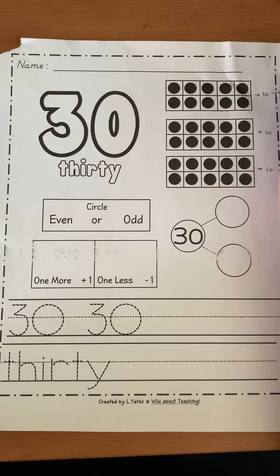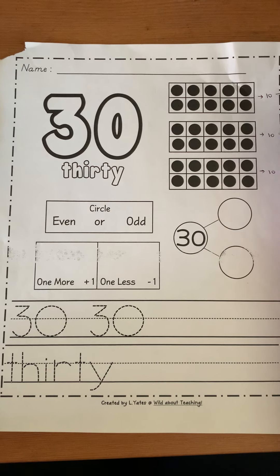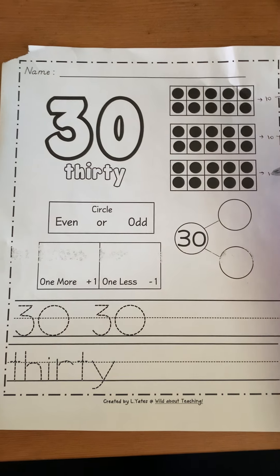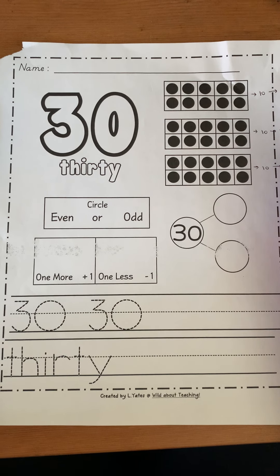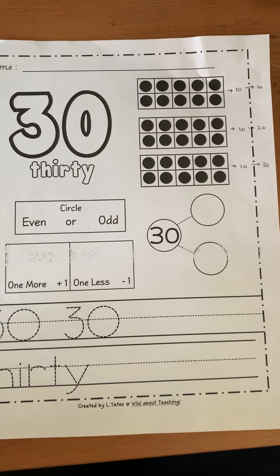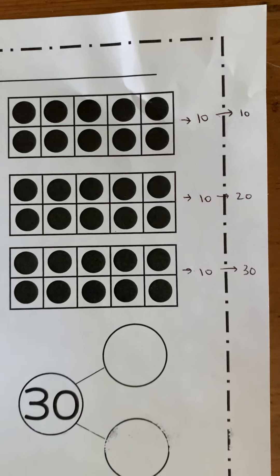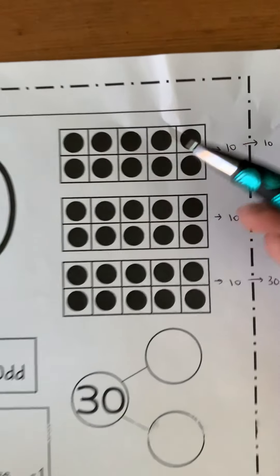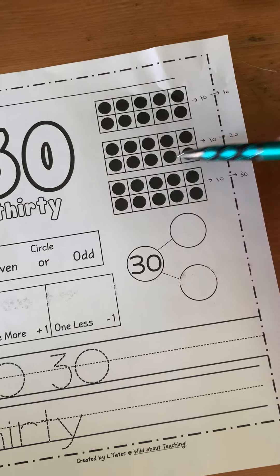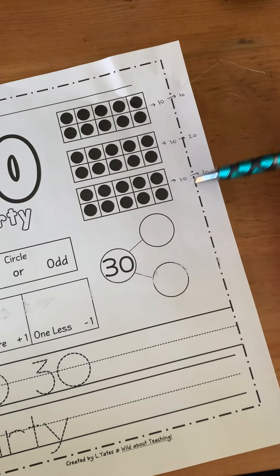If we're counting in groups of 10s, that says 10, that turns into 20, and this is 30. So 10, 20, 30.